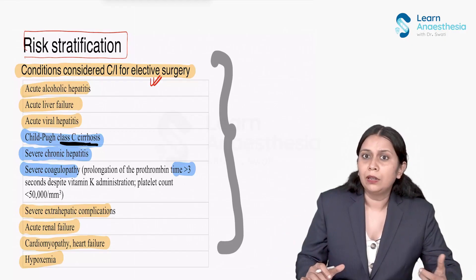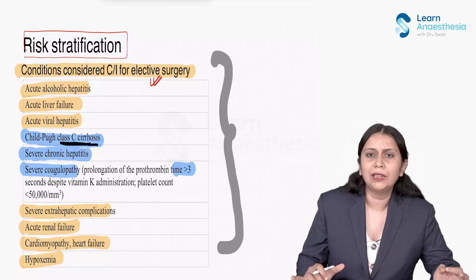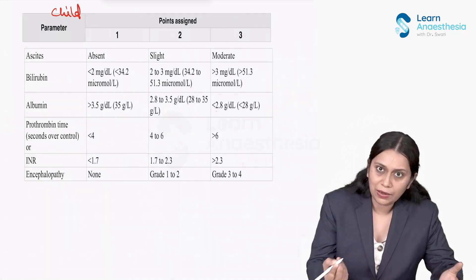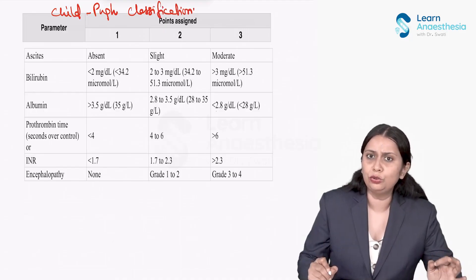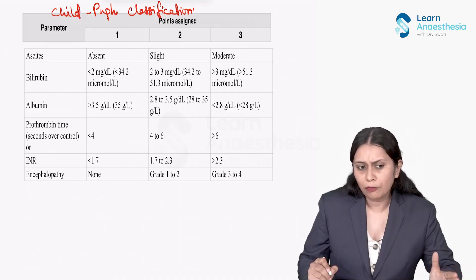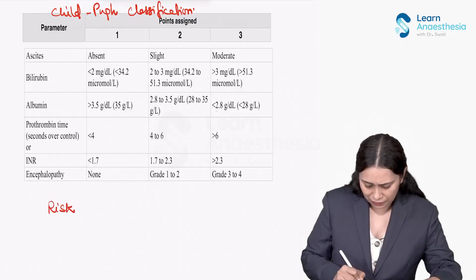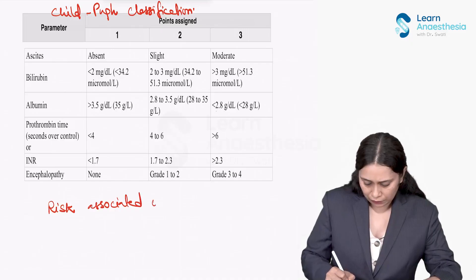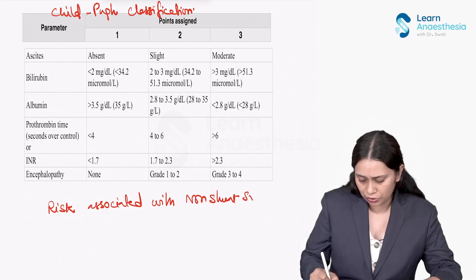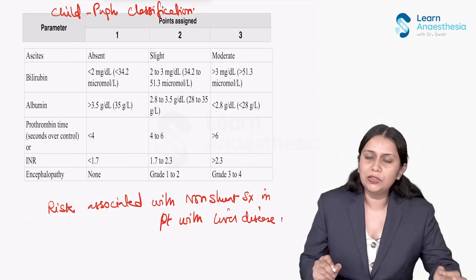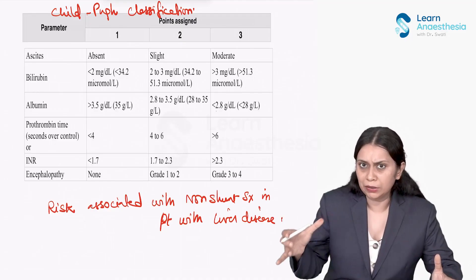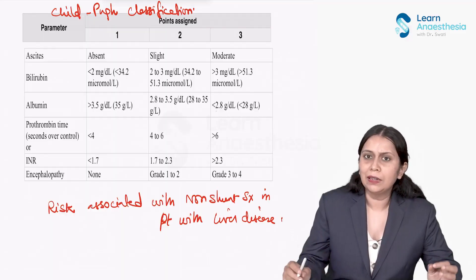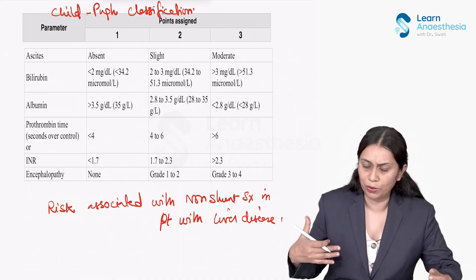Now let us discuss some risk stratification systems to assess the risk associated with surgery. The most popular one is the Child-Pugh classification. This classification system was developed to assess the risk associated with non-shunt surgery in patients with liver disease or liver dysfunction. The Child-Pugh classification has several parameters, each given a point score between 1, 2, and 3, and after calculating the total points, patients are classified into groups A, B, and C.